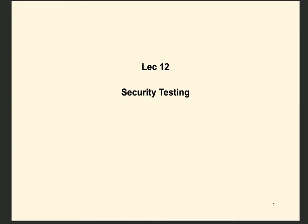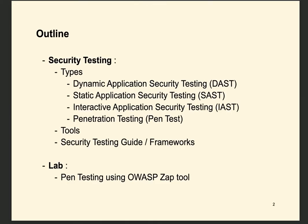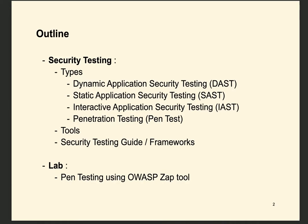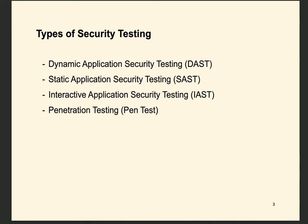This week we are learning about security testing. The outline covers four types of security testing: Dynamic Application Security Testing (DAST), Static Application Security Testing (SAST), Interactive Application Security Testing (IAST), and penetration testing (pen test). We will also look at some tools, the security testing guide framework, and do a lab using a tool called ZAP, developed by the OWASP community.